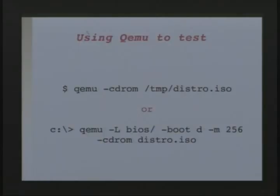QEMU, the process emulator: you tell it to use CD-ROM, then tell it where the ISO is, and it will test it for you. It runs a little slower but it's a lot easier than burning a CD. There's also a Windows command for QEMU, since it's kind of cryptic and not well documented.